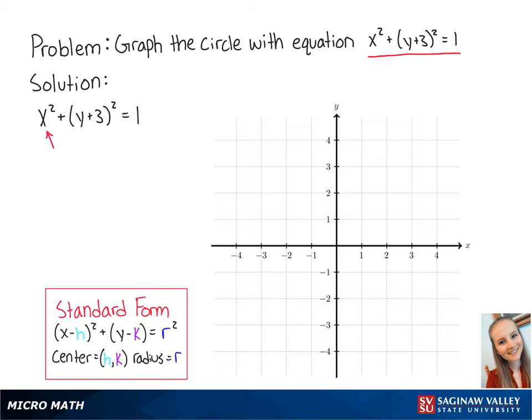We can rewrite x squared as x minus 0 squared. So now we know that h is equal to 0 and that k is equal to negative 3.